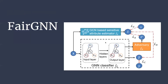Now for social bias, the final model: FairGNN is a proposed model to mitigate the effect of social bias — the bias based on whether people are German, male, female, or any sensitive attribute. The author proposes a GCN-based sensitive attribute estimator (the blue box) that estimates sensitive attributes for unlabeled nodes, and then tries to do the classification task based on the estimated attributes.